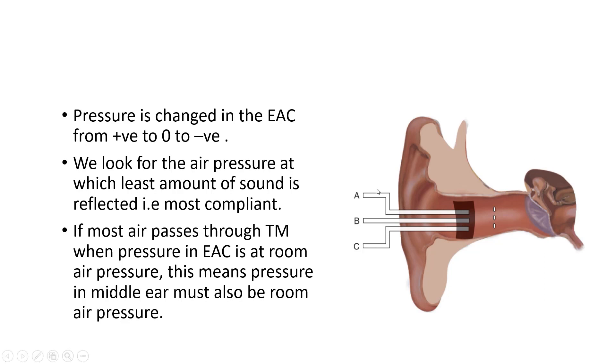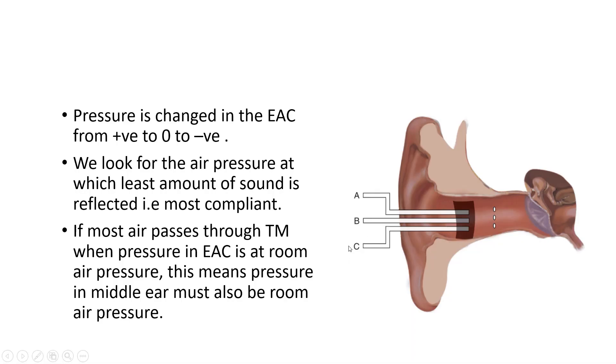Chamber B is a pump that produces air pressure. The maximum amount of sound waves is reflected when the tympanic membrane is most stiff, that is when it is least compliant. So when chamber C or the microphone records the maximum amount of reflected sound, that means the compliance is lowest, because when it is most compliant, most of the sound waves pass through it and the least amount is reflected.